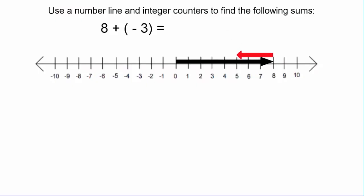The sum is where the tip of the second arrow ends, and that is right above the value of five. So we know from this that eight plus negative three is equal to five.